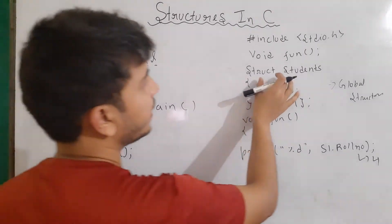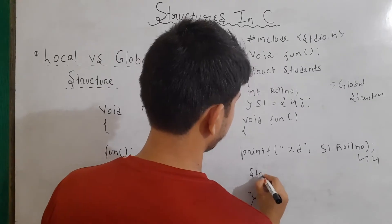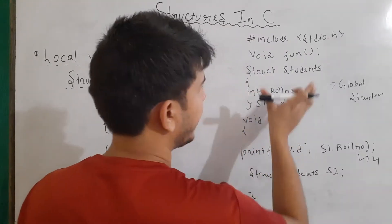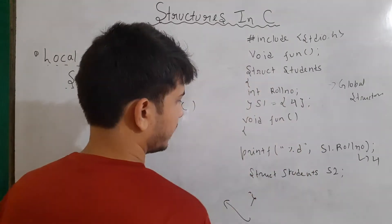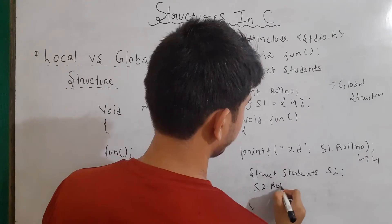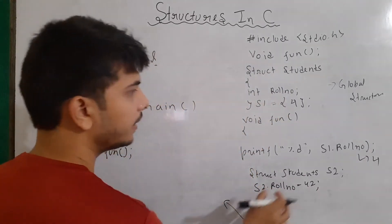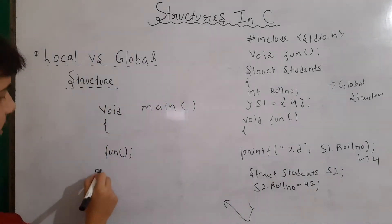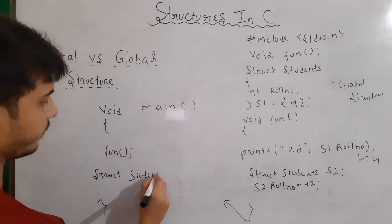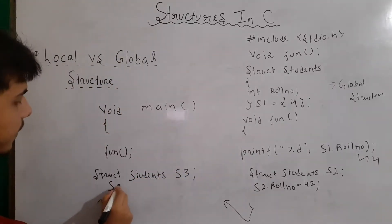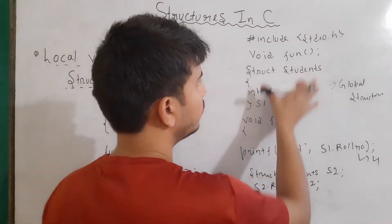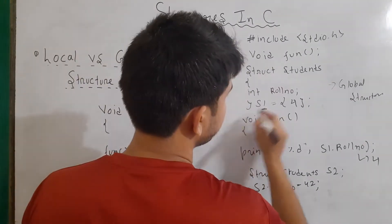Similarly, I can also make new variables for our structure. I can write here struct students and then the name of our variable, let's say h2. It means that in any function definition, I can create new variables of our structure. I had made here a new variable of our structure student and now I can also access its value — for example, h2 dot roll number equals to 42.